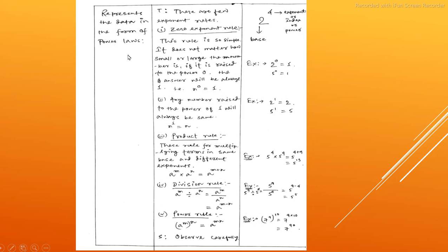Read presentation, the data in the form of power slot. Zero exponent row. Power to the instant row. Power to the instant object gap.